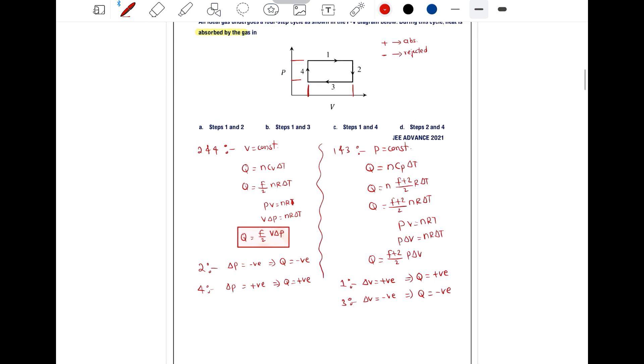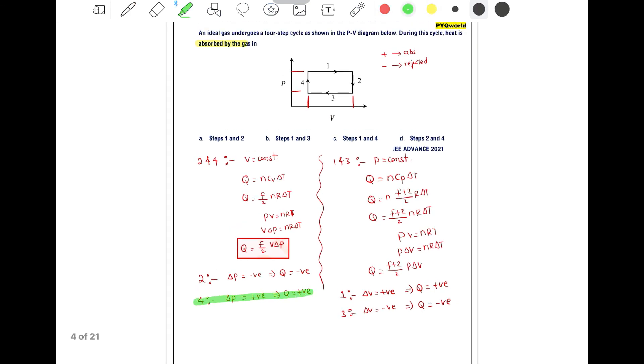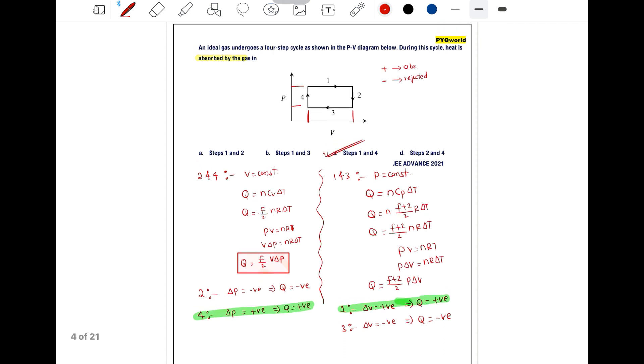We have two processes in which Q is positive: process 4 and process 1. So steps 1 and 4 both are correct ones. Steps 1 and 4 means option C is the correct one.